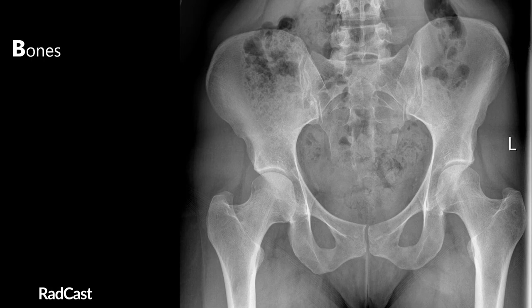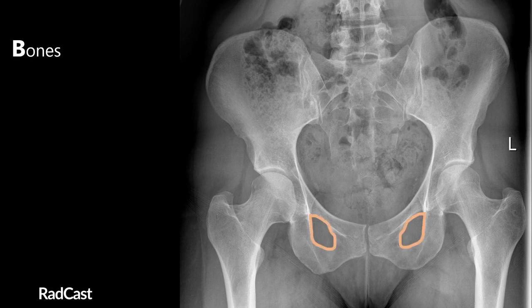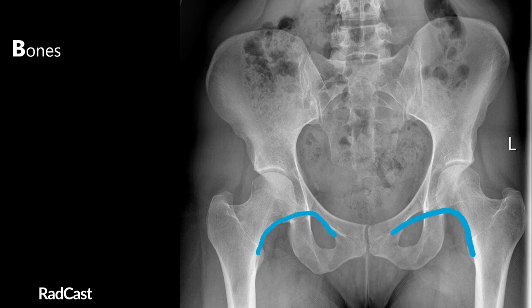There are three sets of lines to assess when looking at bones. First is the pelvic brim, which should be mostly circular and symmetrical on both sides. Then there are the two obturator foramina, which should have a smooth outline and be symmetrical — any asymmetry may represent a fracture in the superior or inferior pubic rami. The final line to assess is Shenton's line, found bilaterally following the medial edge of the femoral neck and the inferior edge of the superior pubic rami. Any discontinuations in the cortex or disruption to these lines could indicate a fracture.